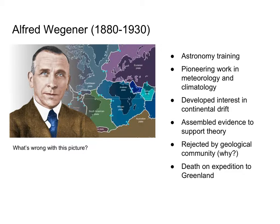The person who is mostly associated with the idea of continental drift is Alfred Wegener, a German who was trained as an astronomer. He did a lot of pioneering work in meteorology and climatology. He's the one who really began to build the case for continental drift — the idea that continents are not fixed in place but have the ability to move around the world.